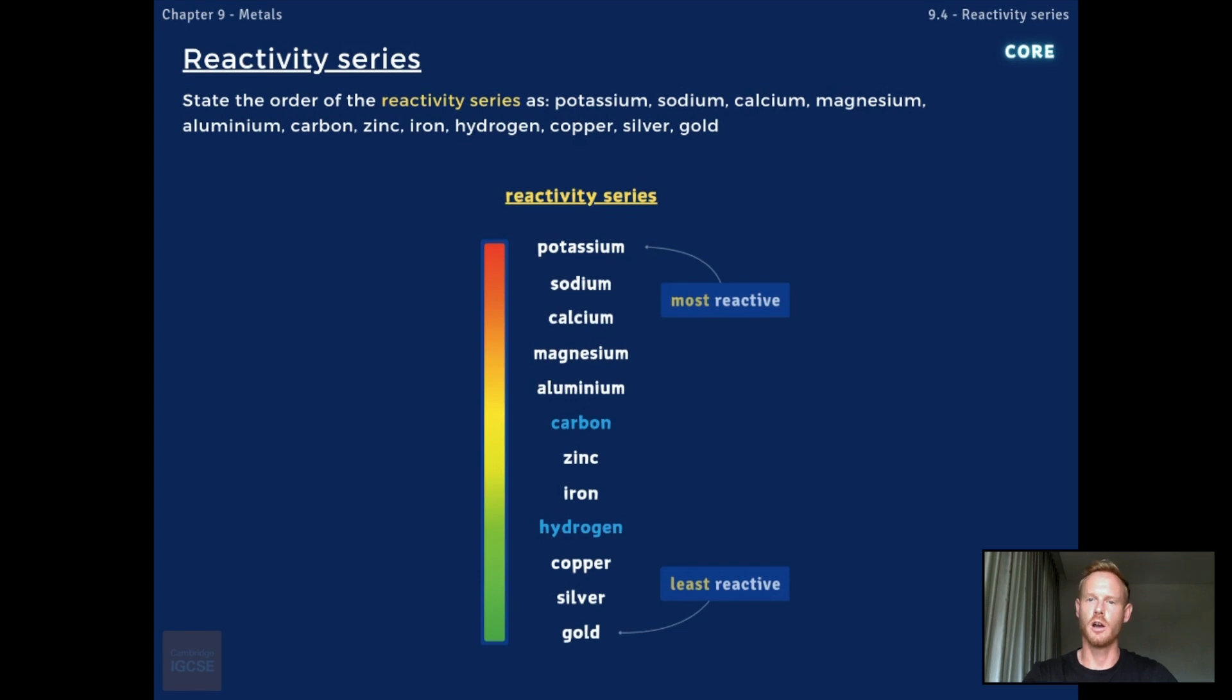Note that carbon and hydrogen are non-metals, but are included in the series because they're used to extract metals from their oxides. For more on the extraction of metals, see topic 9.6, coming soon.